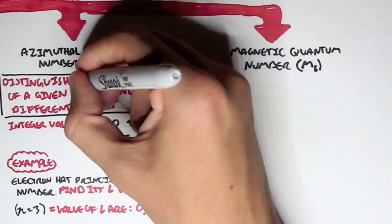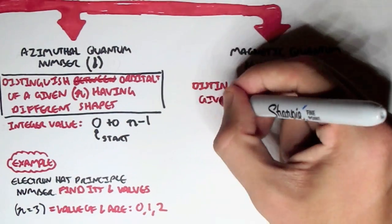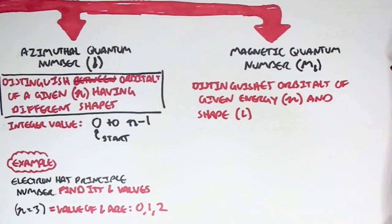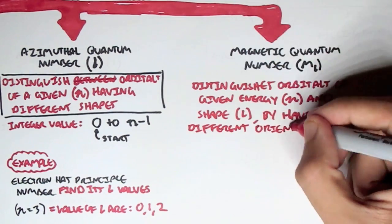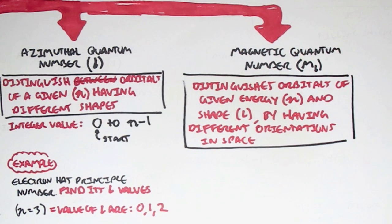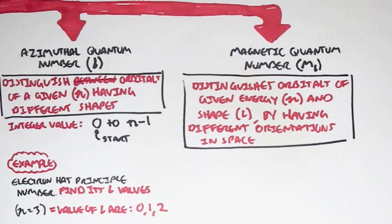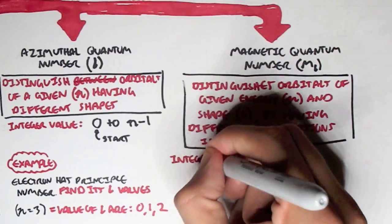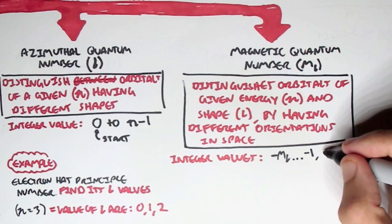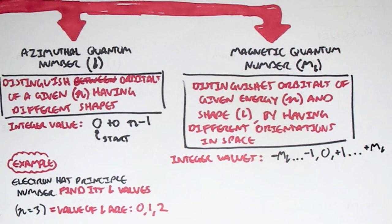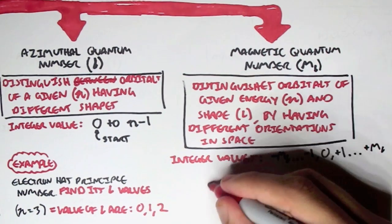The third quantum number is the magnetic quantum number, abbreviated Ml. This distinguishes orbitals of given energy N and shape L by having different orientations in space. So the principal number tells us the energy of the electron, the azimuthal quantum number tells us the shape of the orbital, and the magnetic quantum number tells us the different orientations this shape can take. The magnetic quantum number can have integer values, usually beginning with a negative value to a positive value, and these integer values depend on the azimuthal quantum number L.